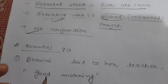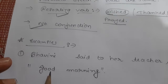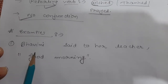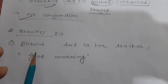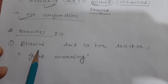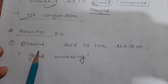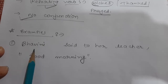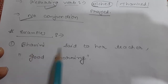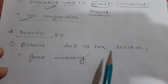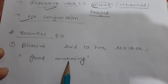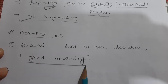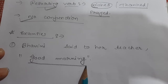Now let's turn towards examples. This is very easy compared to all other types of sentences because here you need to remember only the reporting verb and no conjunction at all. First example: Bhavini said to her teacher, 'Good morning.' See, the reported speech is very short — just 'Good morning.'